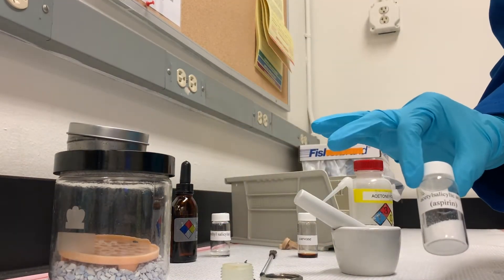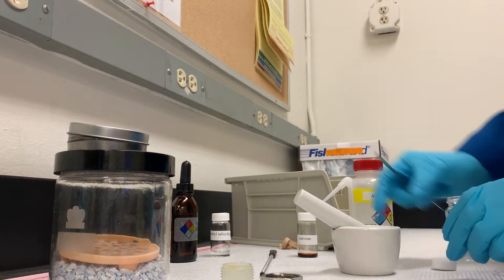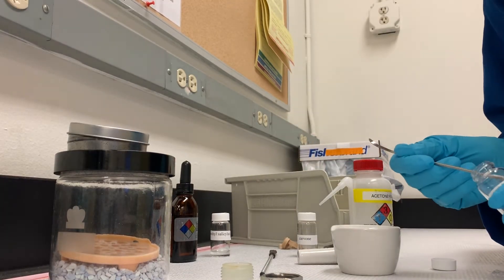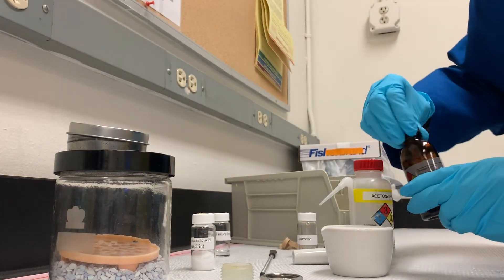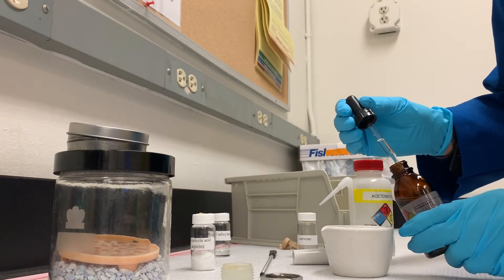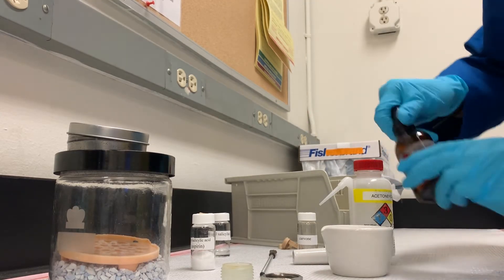For getting the spectrum of aspirin, it's a solid. This is why we have our spatula here. I'm going to take a very small amount. One drop of Nujol, this is a hydrocarbon mixture. This comes out kind of fast sometimes, so you don't even have to press it. Just let a drop fall out. One. One drop.